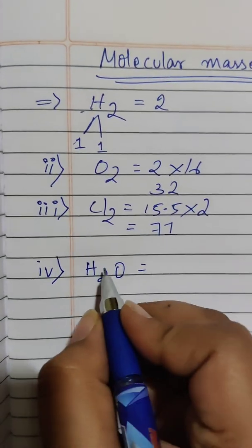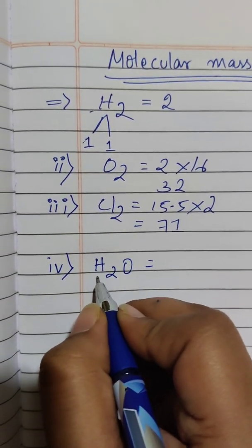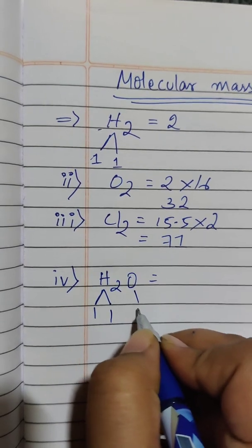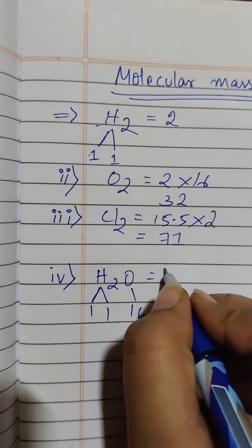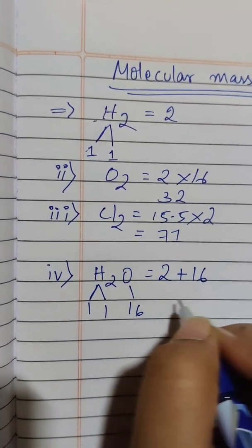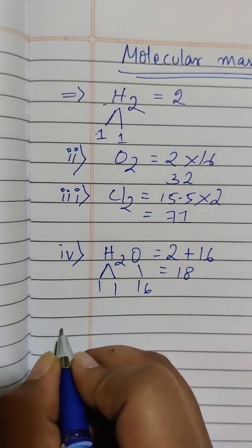H2O. Two atoms of hydrogen, one atom of oxygen. Two plus sixteen. Eighteen.